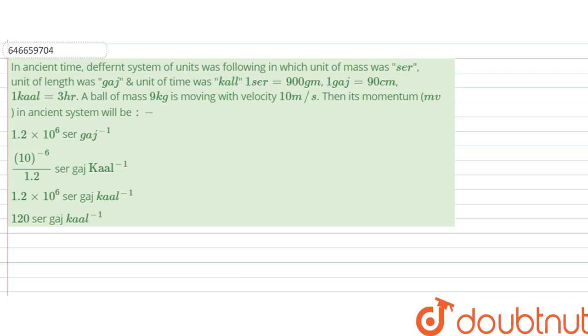Hello, we are given with a question. The question says that in ancient times, a different system of units was followed in which the unit of mass was ser, the unit of length was gaj or gauge, and the unit of time was kal. One ser equals 900 grams, one gauge equals 90 centimeters, one kal equals 3 hours. A ball of mass 9 kg is moving with velocity 10 meters per second. Then its momentum in the ancient system will be how much?